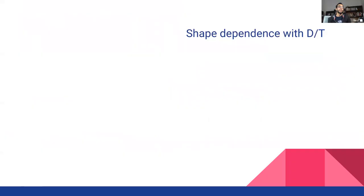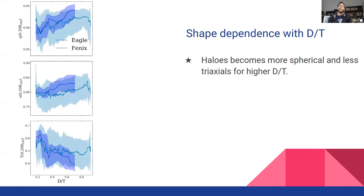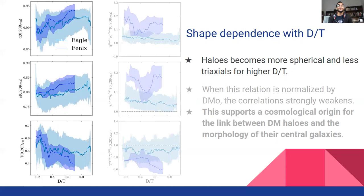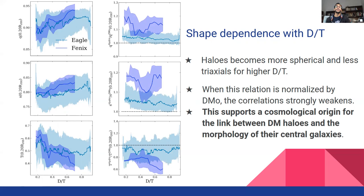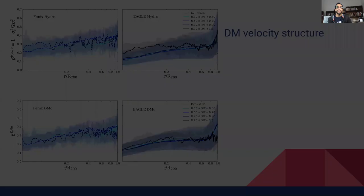Dark matter halo shape parameters measured at the 20% of the virial radius in the hydro runs as a function of disk to total fraction is shown in this figure. Halos become more spherical and less triaxial for higher disk to total fractions. But when this relation is normalized by dark matter only simulation halos, this correlation strongly weakens. This supports the fact that disk galaxies form preferentially in more spherical dark matter halos.